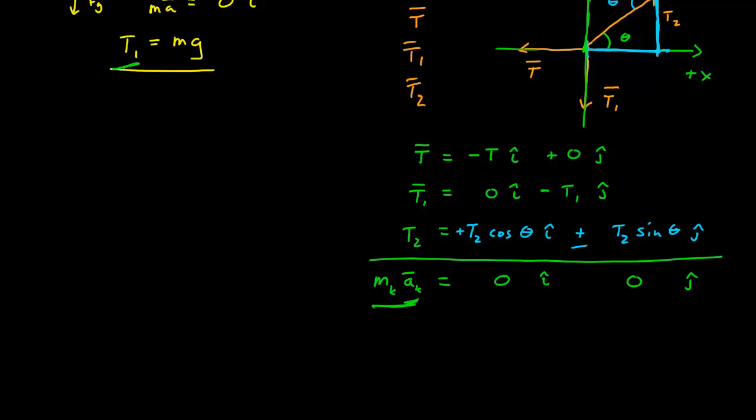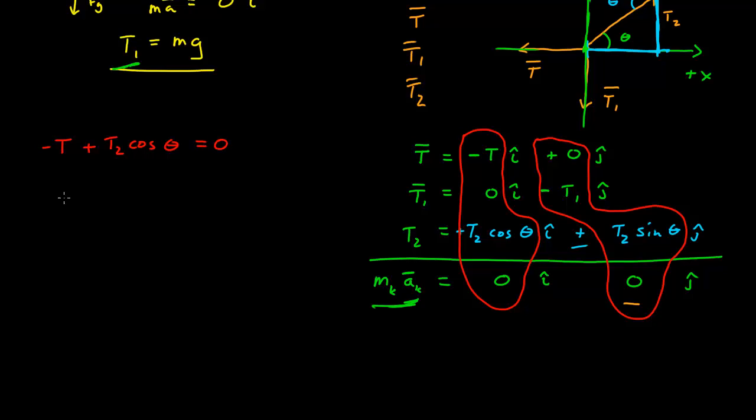And this now gives me relationships between my parameters. So in the first expression, do the Y axis first. Let's see, where are my two relationships here? I sum my X components and then sum my Y components. My Y component gives me, I'll do X component. It gives me minus T plus T2 cos theta is equal to zero. And then I have minus T1 plus T2 sine theta equal to zero.